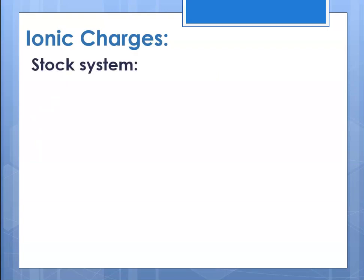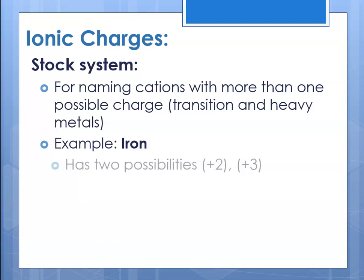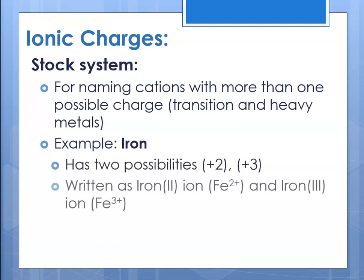The other thing we have to talk about is those metals in the middle of the periodic table — the transition metals and some of the heavy metals. Something called the Stock system is used for naming cations because they can form more than one possible ion. The metals in the D block and the heavy metals in the bottom of the P block all form more than one ion, so we use Roman numerals to denote the charge. Iron two has a charge of plus two and iron three has a charge of plus three, written as a capital Roman numeral in parentheses next to the metal.